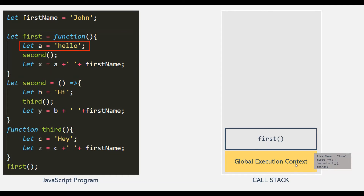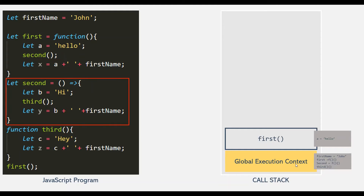Now inside this first function, we are first declaring the variable a. So this variable a will get stored inside the execution context of the first function. And then we are calling the second function. So the execution control will reach to the definition of the second function. When a function is called, an execution context gets created for that function on top of the currently executing execution context. So here, the second function is called from inside the first function, and a new execution context gets created and is put on top of the execution context of the first function.